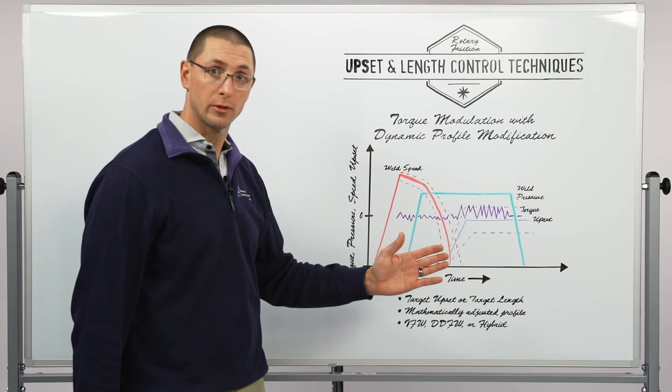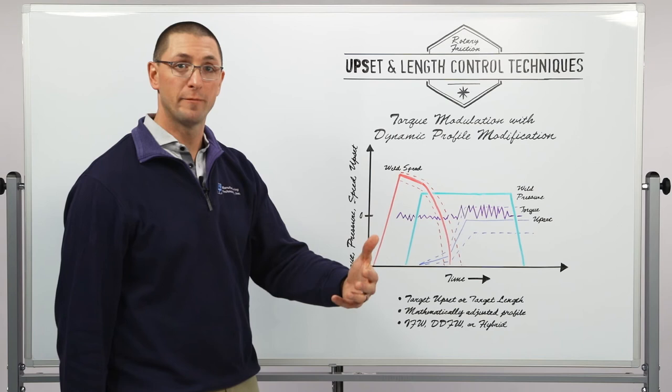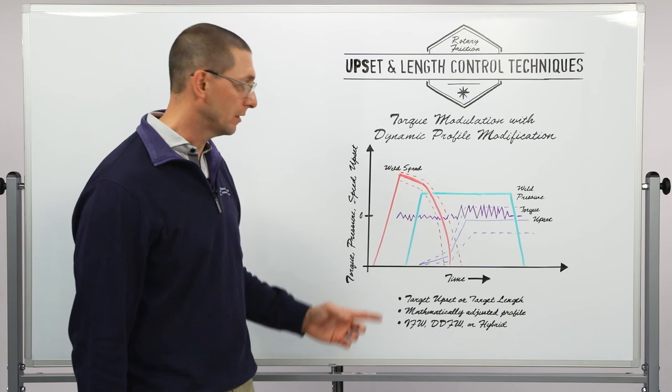If I'm too high in upset between my current weld and my profile then I want to apply some braking torque so that the electric spindle drive pulls energy out of the flywheel system and therefore decreases the amount of upset that I'm getting.